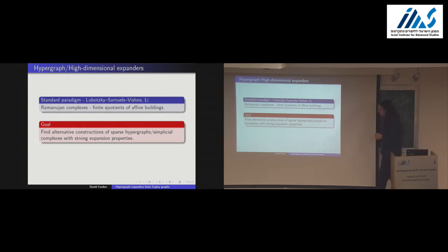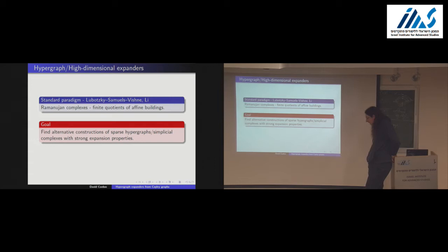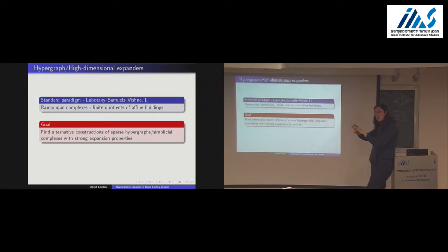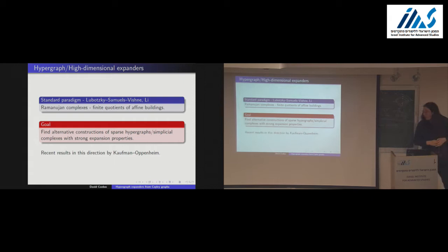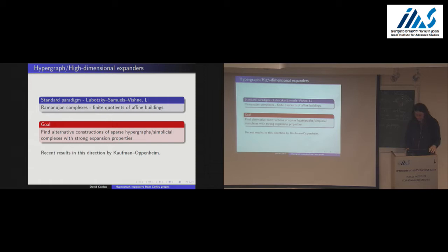There has been lots of work trying to come up with alternative constructions. One natural approach is to generalize the configuration model — work by Lubotsky and Meshulam, and by Lubotsky, Luria, and Rosenthal — but it tends to only work at density 1/n, giving n-squared triples instead of n triples. There's been some recent work by Kaufman and Oppenheim finding a very nice alternate example of what they call a local spectral expander, which needs more work in that general area.